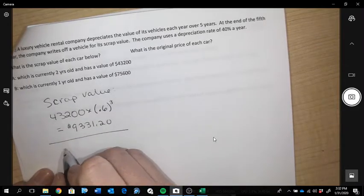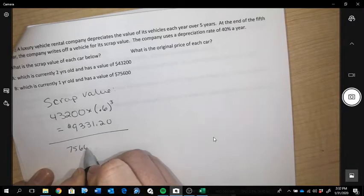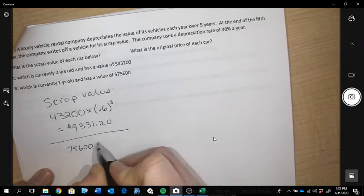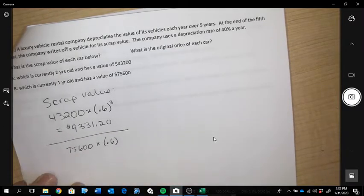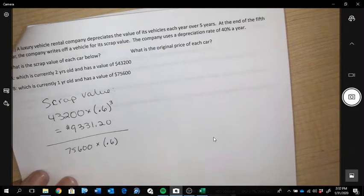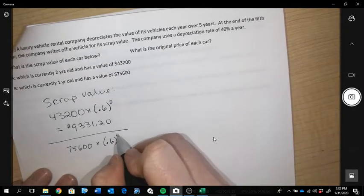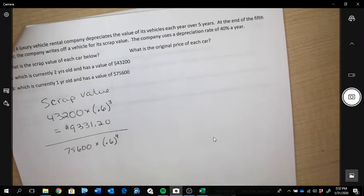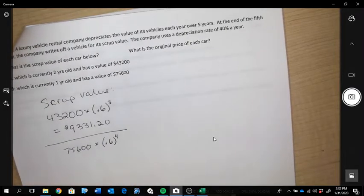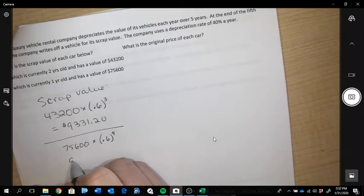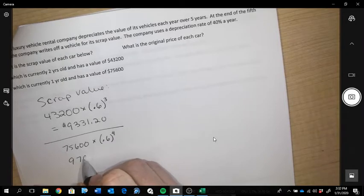For the second vehicle, it's currently 1 year old and has a value of $75,600. So it's going to be worth 60% the next year, and then 60% of that value, and 60% of that value. It's going to go through 4 more years of depreciation because it's one year old, so just under $10,000.